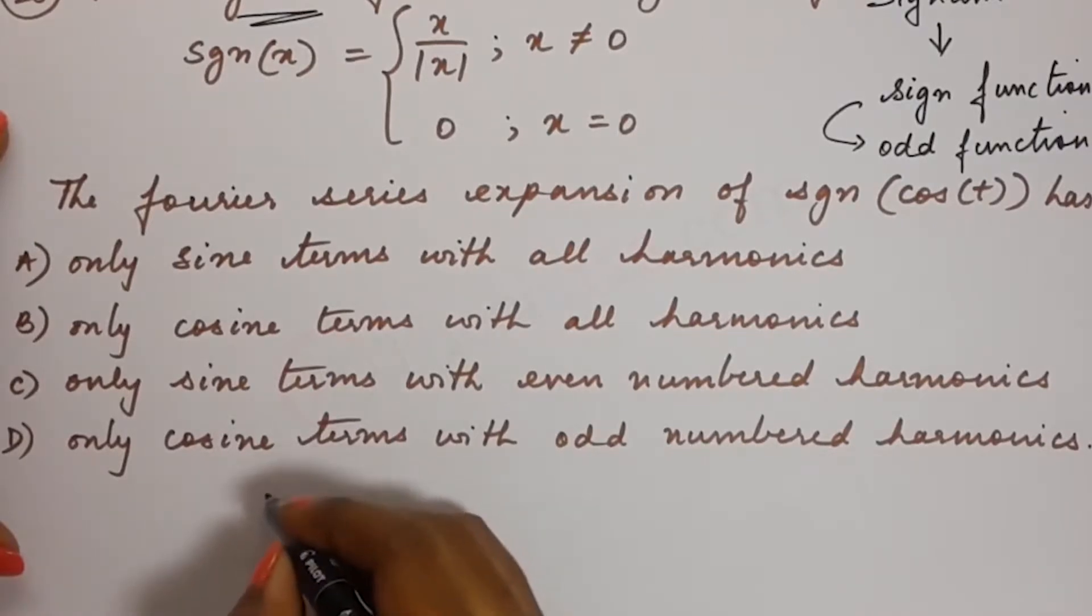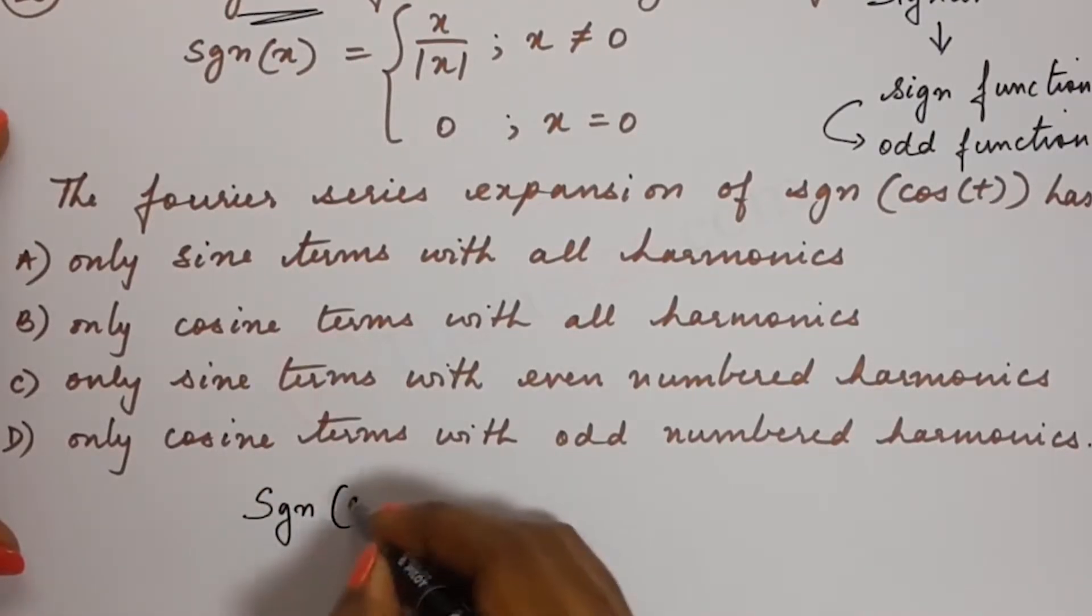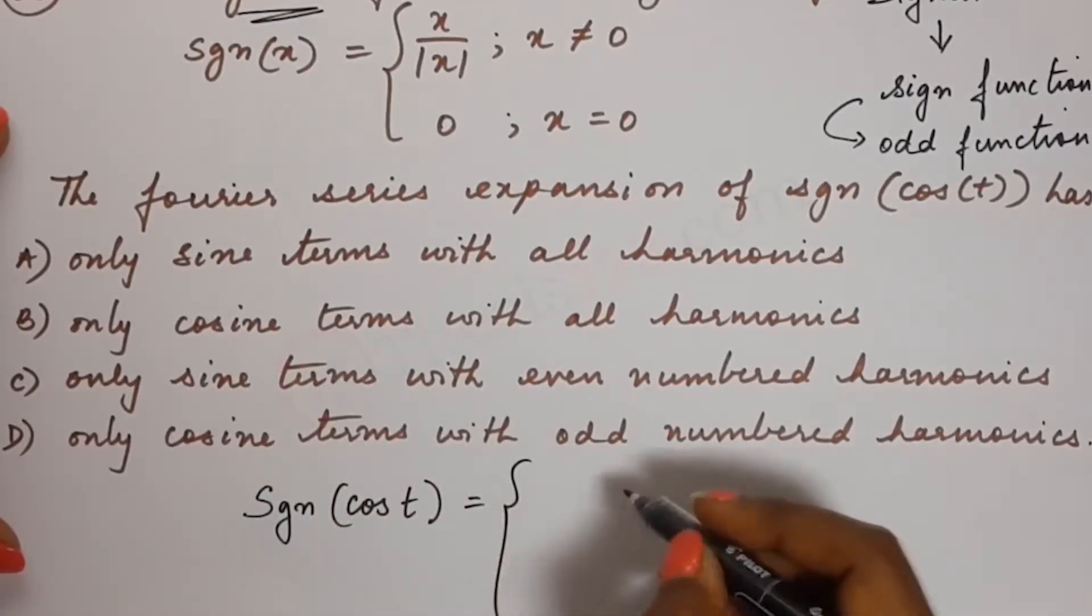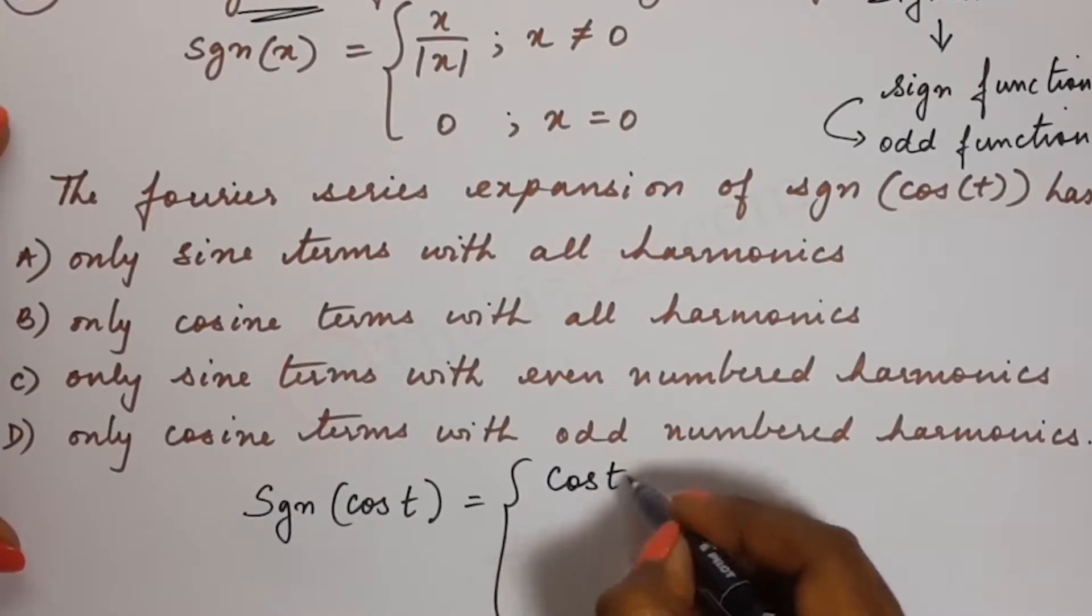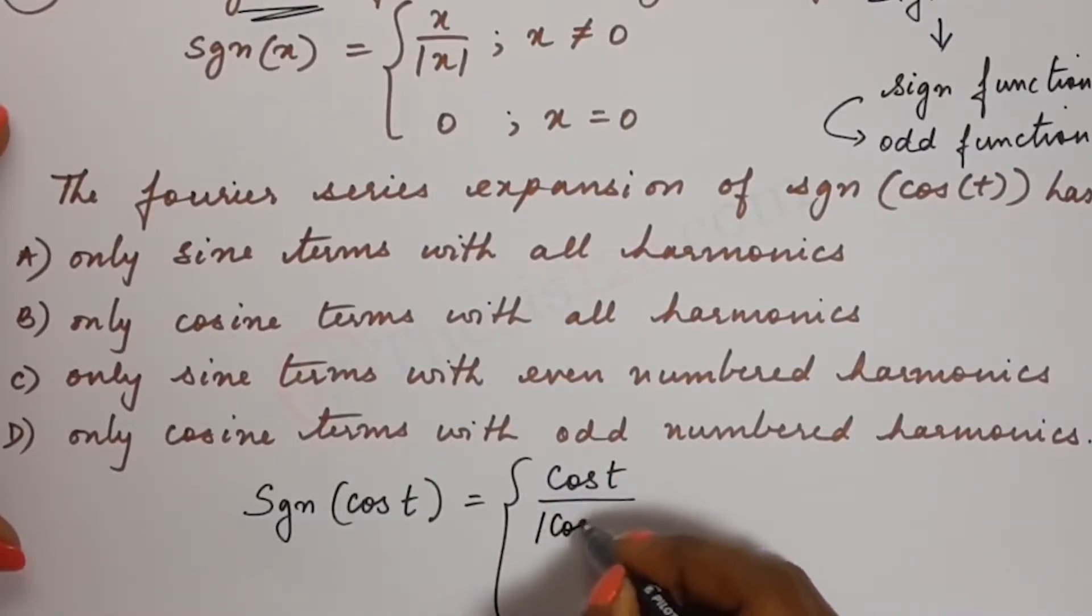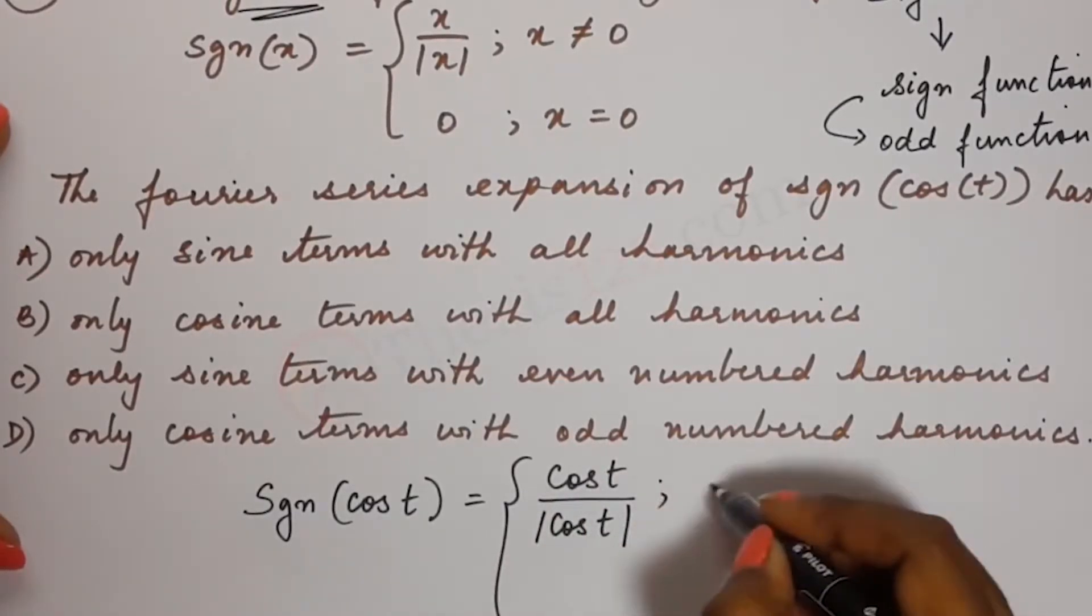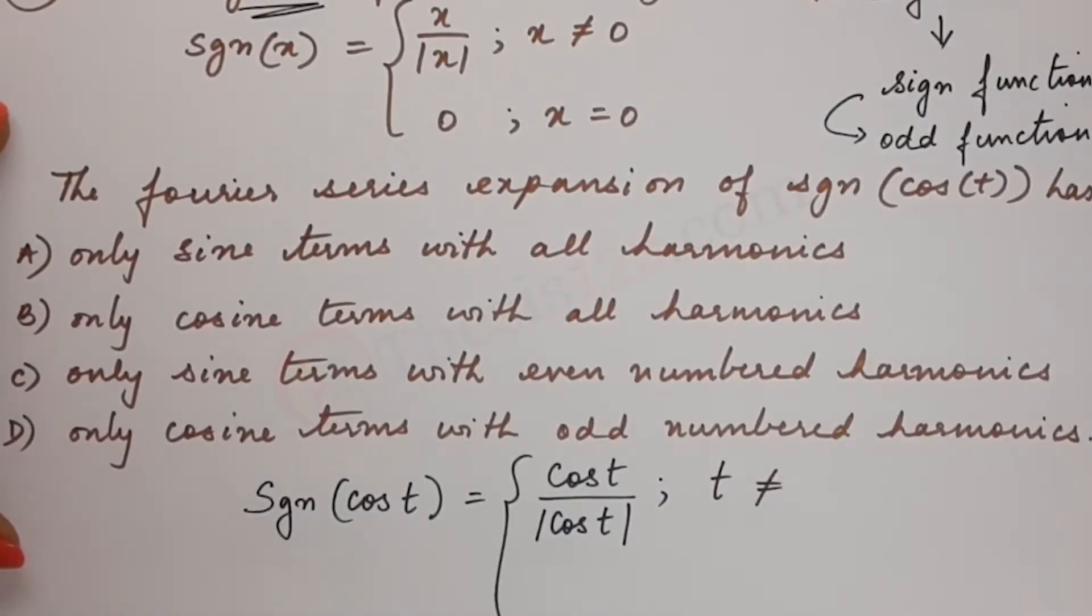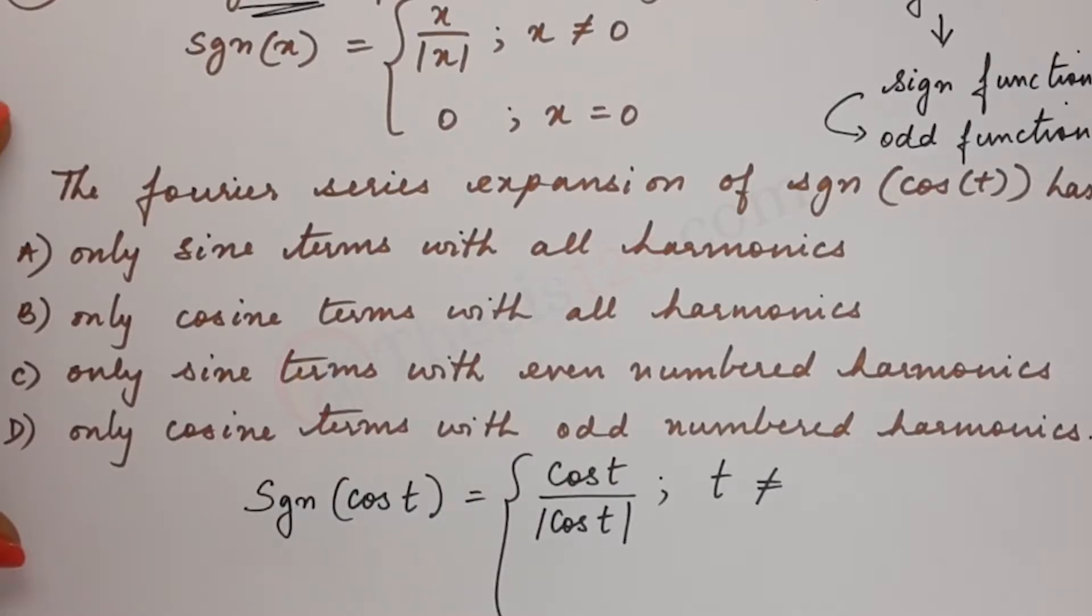So when we do that, we get here signum of cos t is equal to cos t divided by mod of cos t where t is not equal to. Now when is cos t equal to 0?